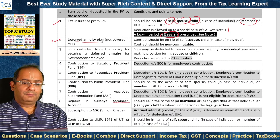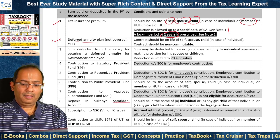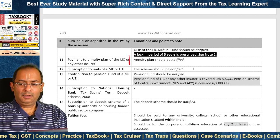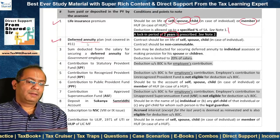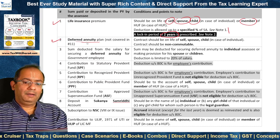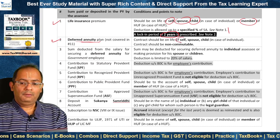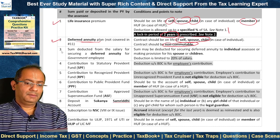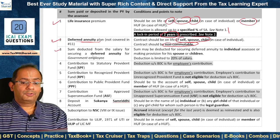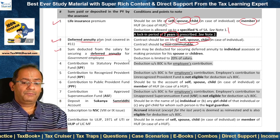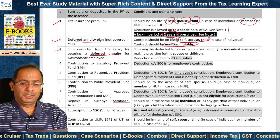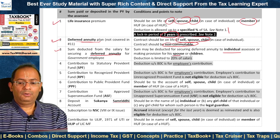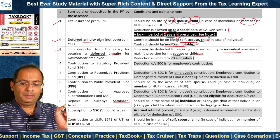Second is Deferred Annuity Plan, covered under 80C. The contract should be on the life of self, spouse, or child in the case of an individual, and the contract should be non-commutable. Third, the sum deducted from salary for securing a deferred annuity is for a government employee only. The sum may be deducted for securing a deferred annuity for the individual or making a provision for spouse or children, and it is limited to 20% of salary.